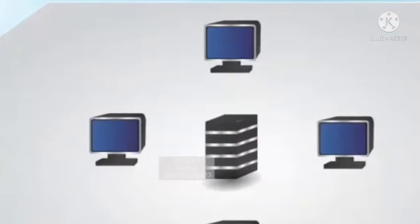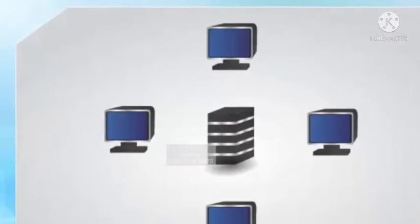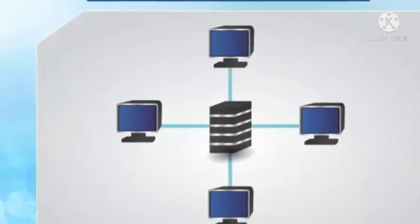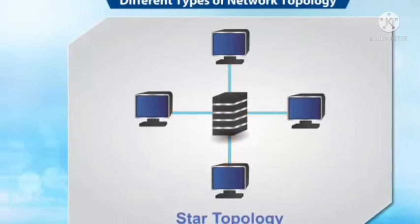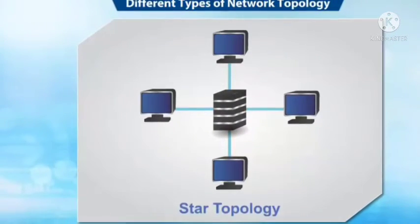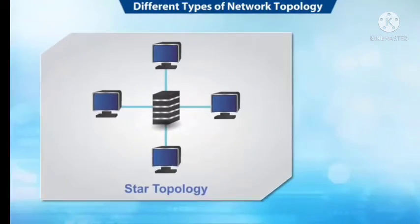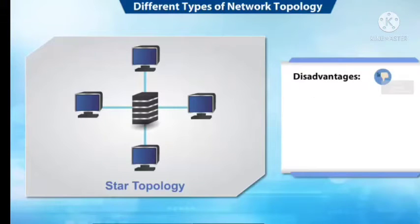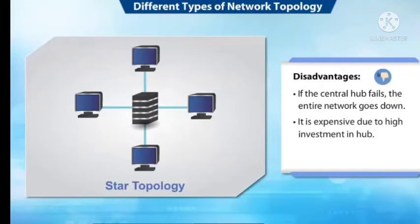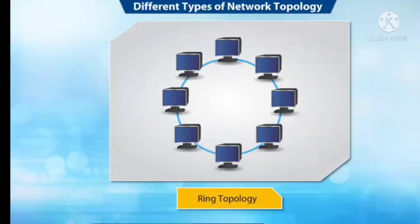Now let's look at star topology. Unlike bus topology where there is a common cable, star topology connects each computer to a central hub. The central hub acts as a server to control the entire network. The advantages of star topology are that startup costs are low, it is easy to add new nodes, and the network is robust. The disadvantage is that when the central hub fails the entire network goes down, and it is expensive due to the high investment in the central hub.